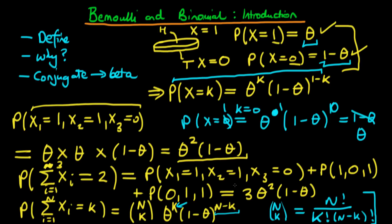Now that we've derived both the Bernoulli and binomial distributions, we need to ask why we would actually use them. One reason is when we're dealing with discrete data that has a success-or-failure structure, where the dependent variable is a binary indicator. An example would be the disease status of an individual — whether they are positive or negative for a disease — which could be modeled using either a Bernoulli or a binomial distribution.